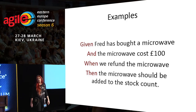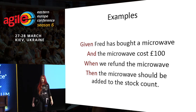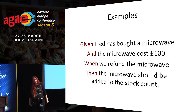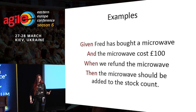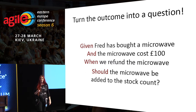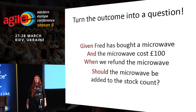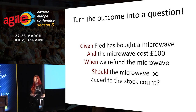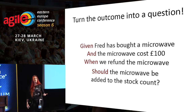Here's another outcome: the microwave should be added to the stock count. So we're also doing the ability to count stock, as well as the ability to handle refunds. This is the new questioning pattern — you can get more scenarios out by just turning that outcome into a question: should the microwave be added to the stock count? I can't believe it took a conversation with Catherine Kirk for me to think of this. You're the first people I've taught this blindingly obvious thing to.